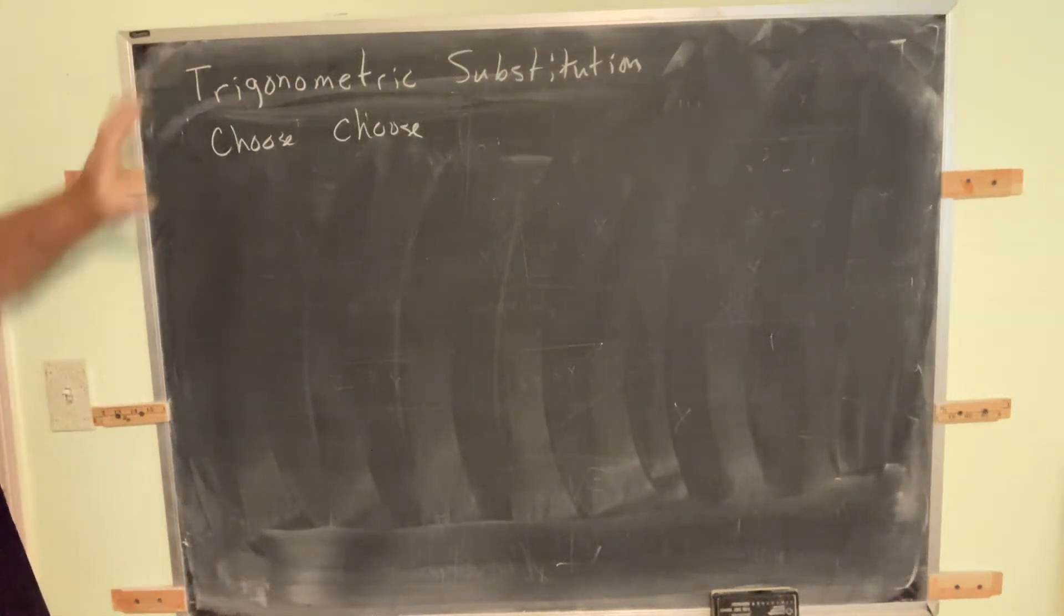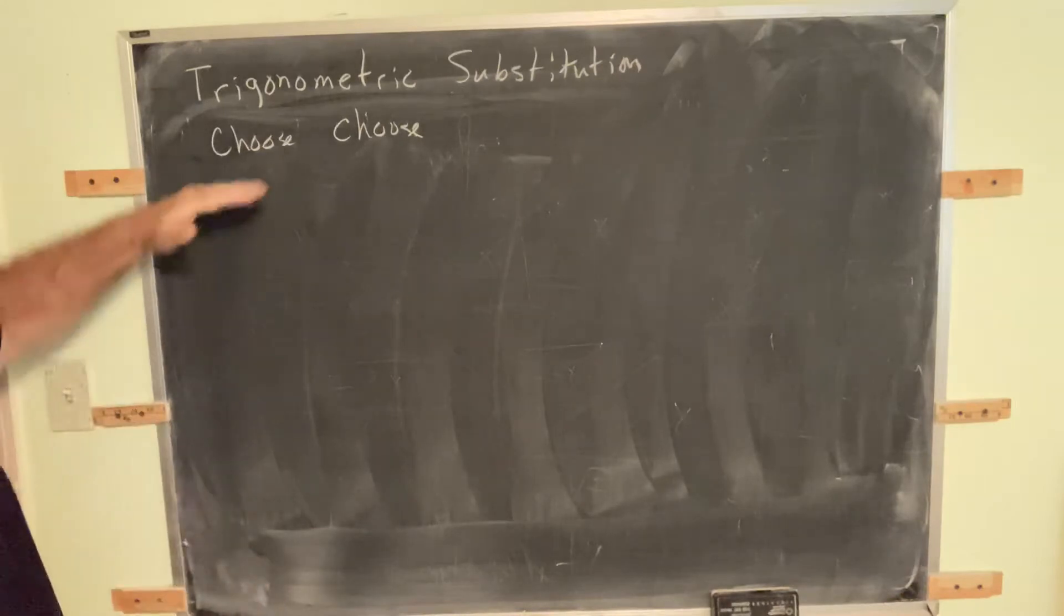The next step in our trigonometric substitution, once we have the triangle labeled correctly, is we make two choices.